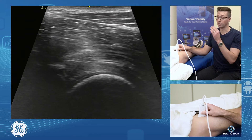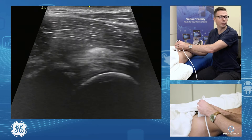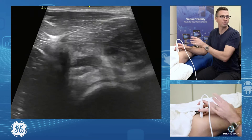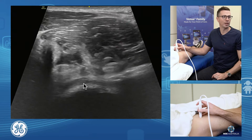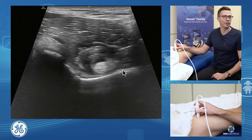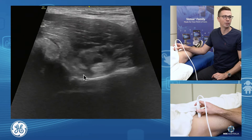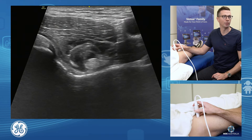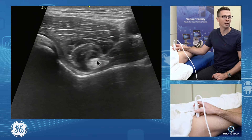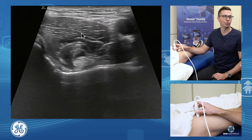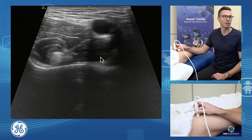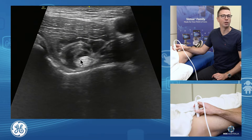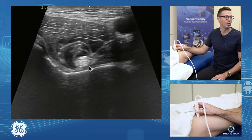From here, we're going to assess our iliopsoas complex. From the front of the joint, we get on that femoral head-neck junction and turn our probe 90 degrees. Here we are on the femoral head, scanning up onto the iliopectineal eminence of the acetabulum. We have the femoral head, acetabulum, and our iliopsoas sitting on top — with the medial fibers of our iliacus, lateral fibers of our iliacus, residual fibers of our psoas, and the neurovascular bundle sitting medially. We see our iliopsoas tendon sitting nicely on the iliopectineal eminence of the acetabulum.